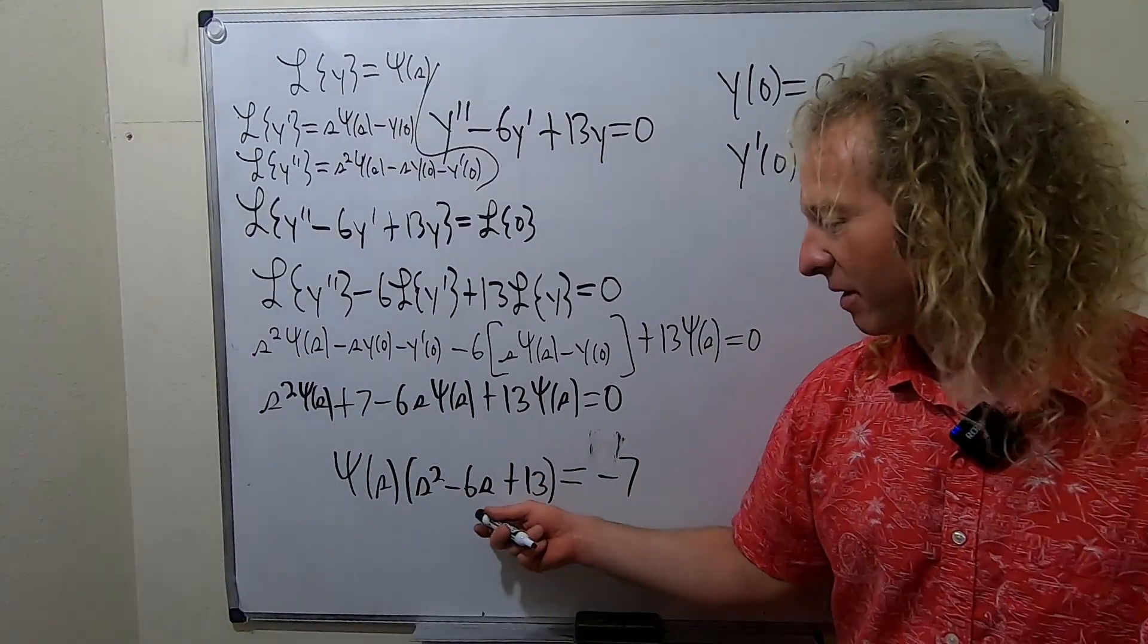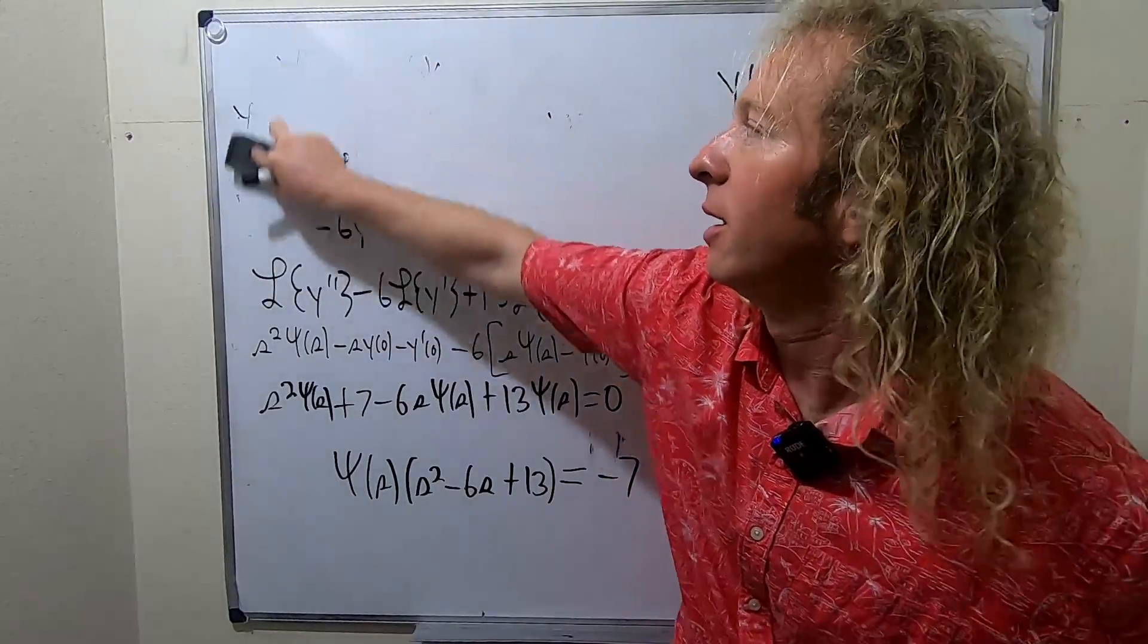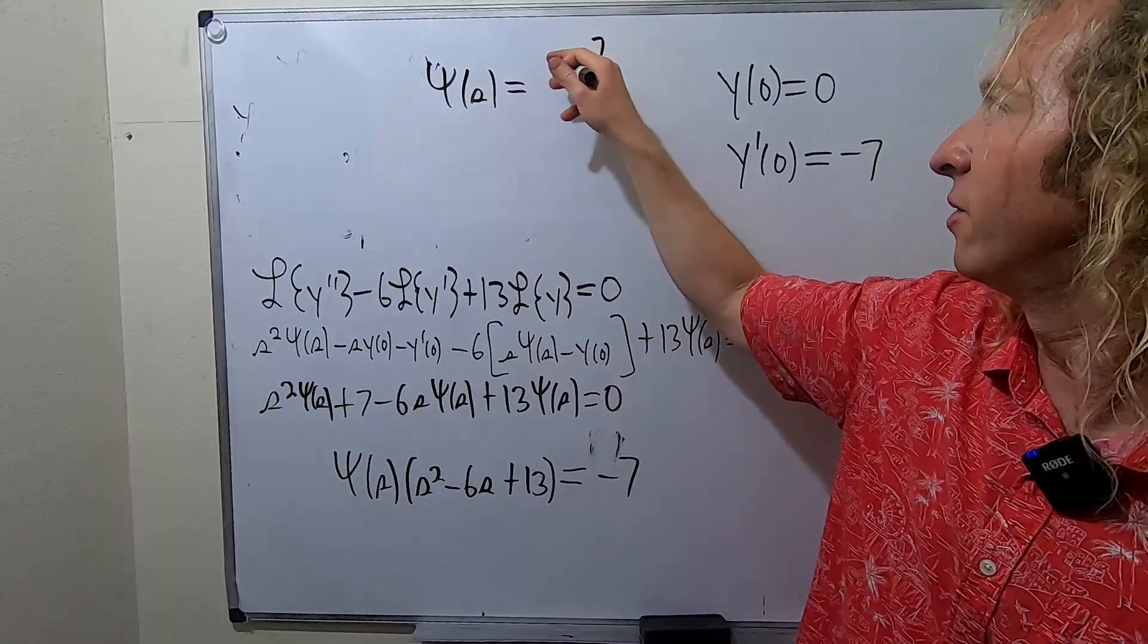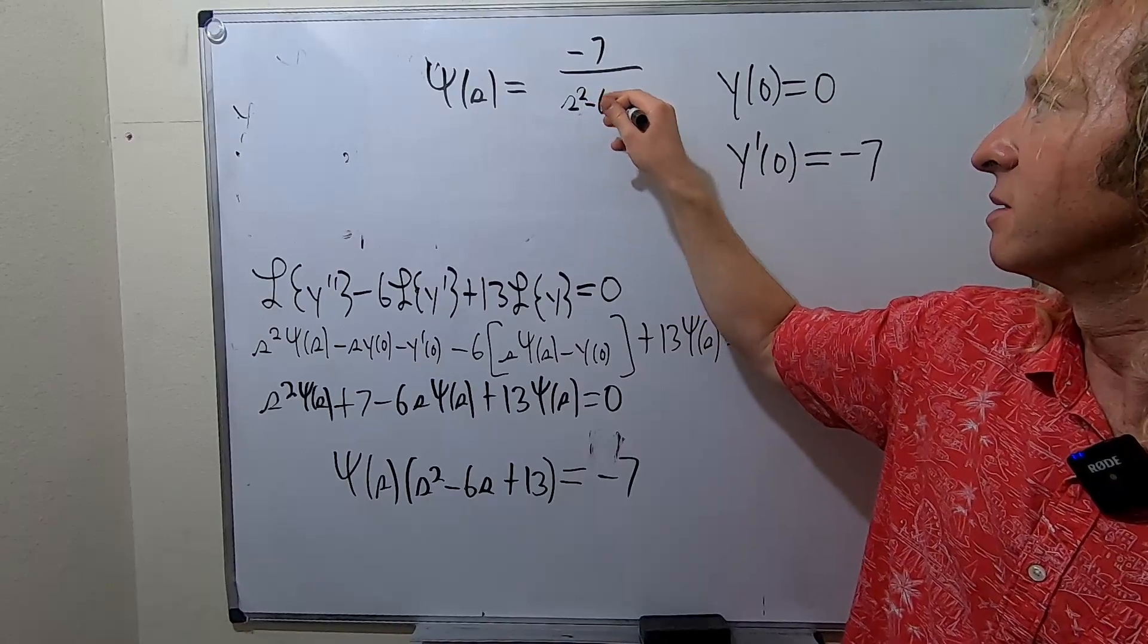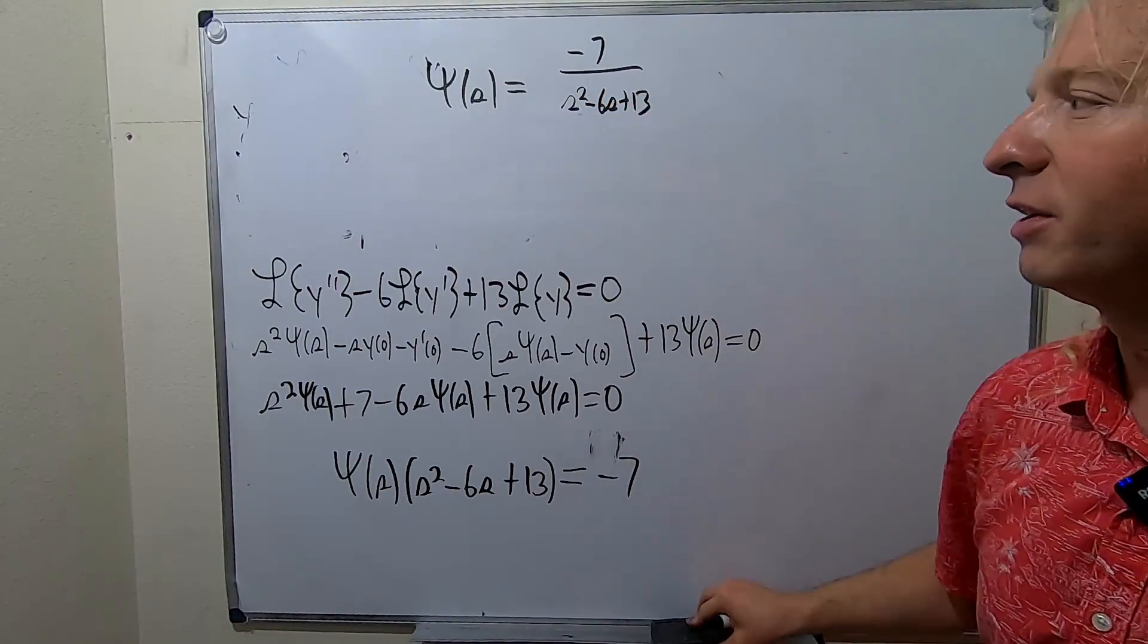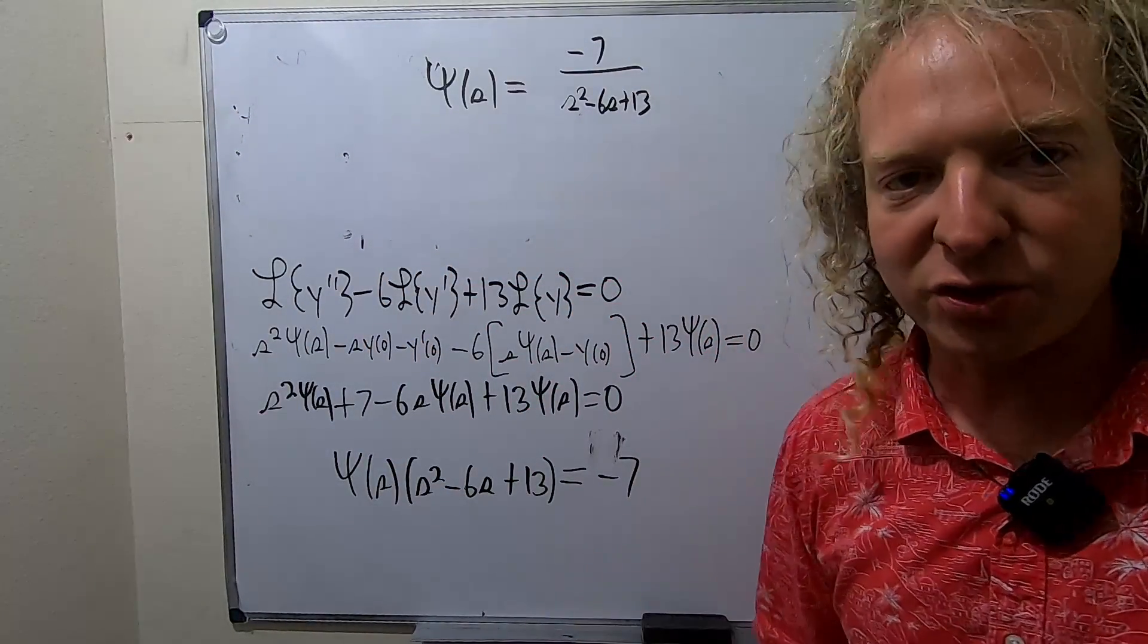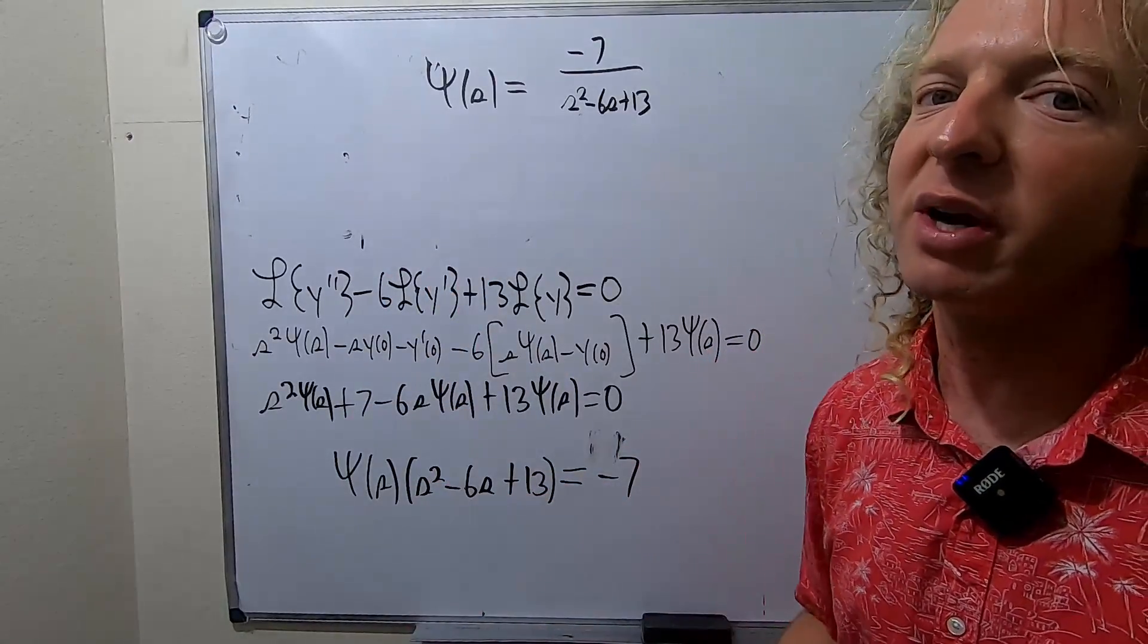Okay, so now we just have to divide by this. So I'm going to come up here and erase what we have. And I'll write it up here. So pitchfork y of s is equal to negative 7 over this stuff here. S squared minus 6s plus 13. I'm going to go ahead and erase this as well. So what did we do? Well, basically, we're trying to solve the differential equation. We're trying to find y. So we took the Laplace transform of both sides. We used those formulas. And we solved for pitchfork y.